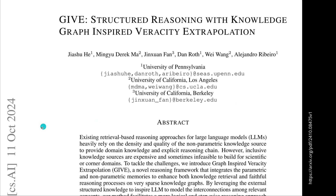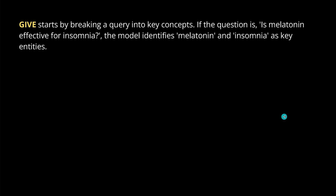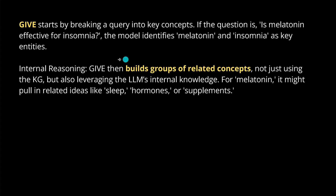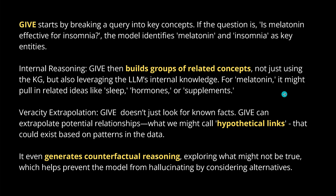New publication: October 11, 2024, University of Pennsylvania, University of California, and UC Berkeley. GIF starts by breaking a query into key concepts. If the question is 'Is melatonin effective for insomnia?' the model identifies melatonin and insomnia as key entities. In the internal reasoning, GIF builds groups of related concepts — not just using the knowledge graph, but also leveraging the parametric internal knowledge of the LLMs. For melatonin, it might bring in related ideas like sleep, hormones, supplements, and whatever else is in the LLM.